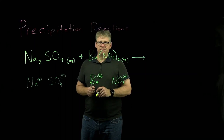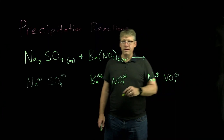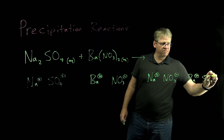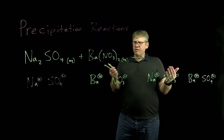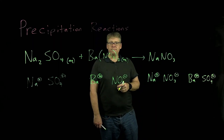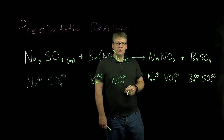Now what we need to do is switch partners. The sodium, which was initially paired with the sulfate, is now going to be paired with the nitrate. And the barium, which was paired with the nitrate, is now going to be paired with the sulfate. With Na+ and NO3-, we need a net charge of zero, so we need one of each — NaNO3, sodium nitrate. Barium 2+ and sulfate go together one-to-one with a net charge of zero. So we've predicted two potential products: sodium nitrate and barium sulfate.